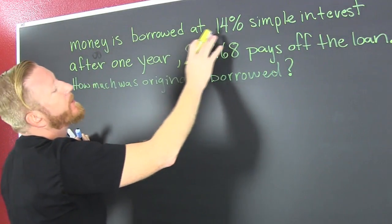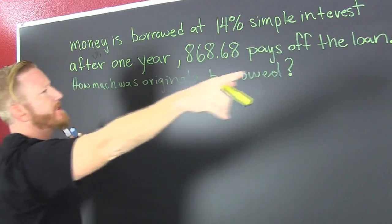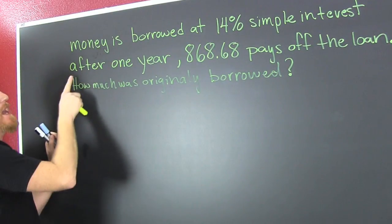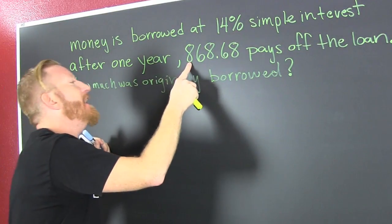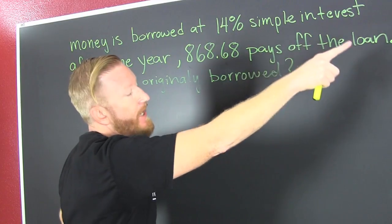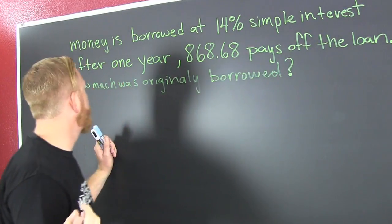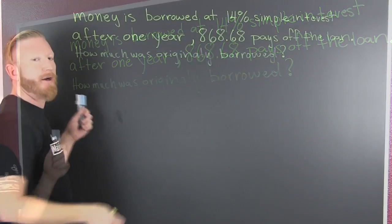Money is borrowed at 14% simple interest. Is that how you spell interest? After one year, $868.68 pays off the loan. So how much was originally borrowed?